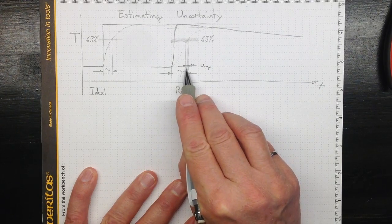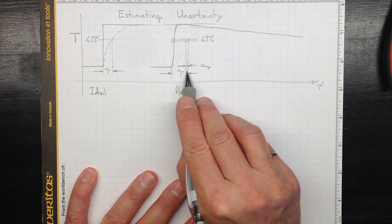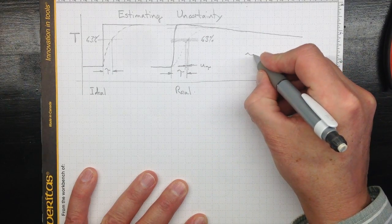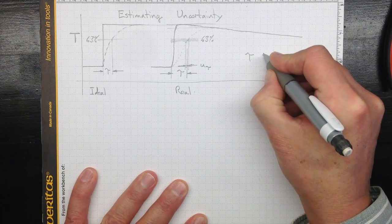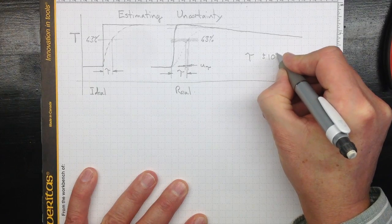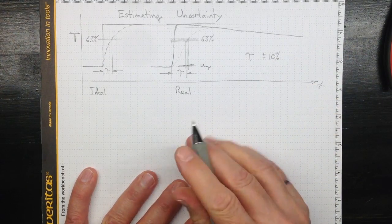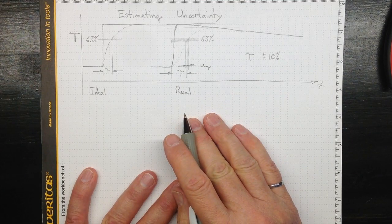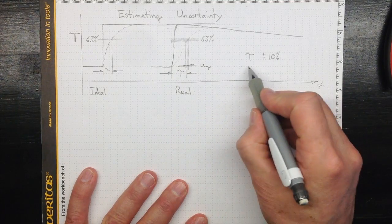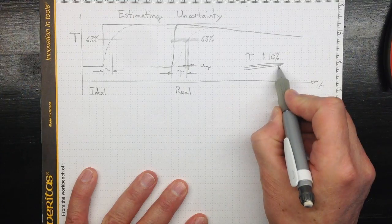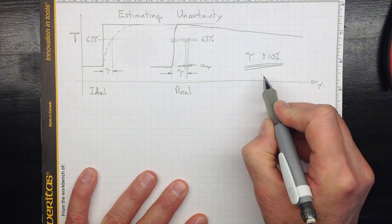that looks like about one-tenth of the total time. Our tau is approximately ±10%, and if that level of uncertainty is acceptable for our evaluations, then that may be a good enough estimate of the uncertainty to go forward with.